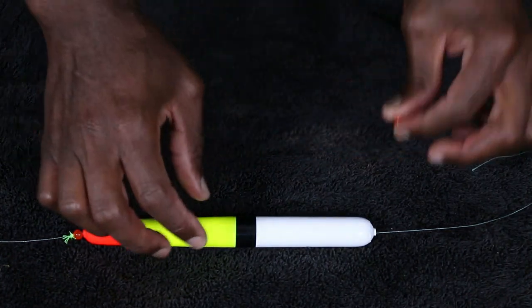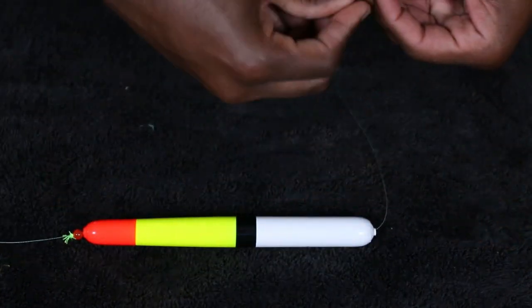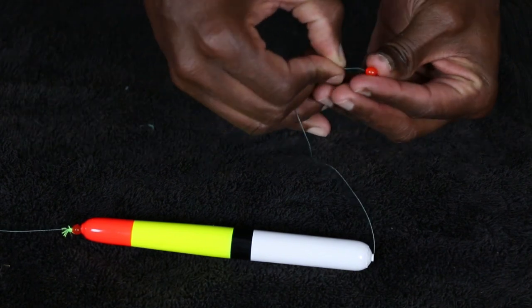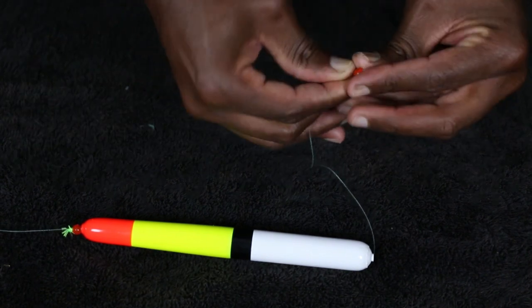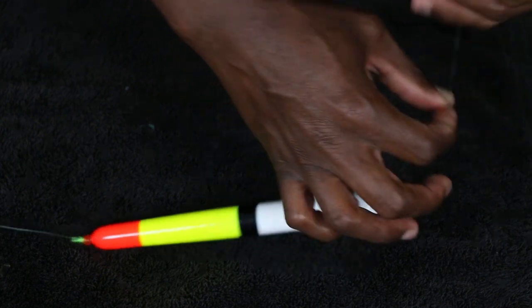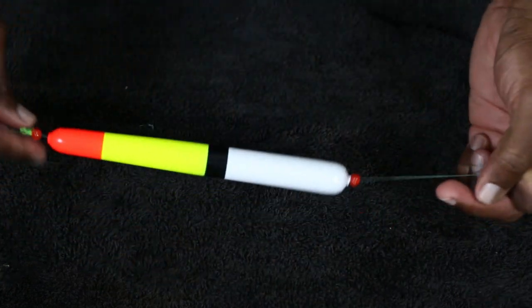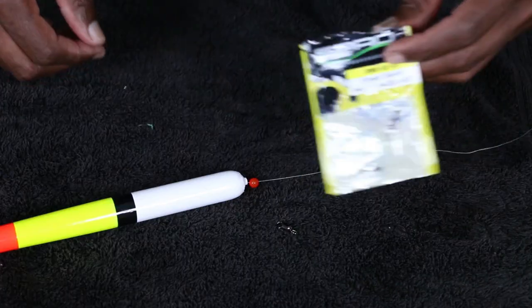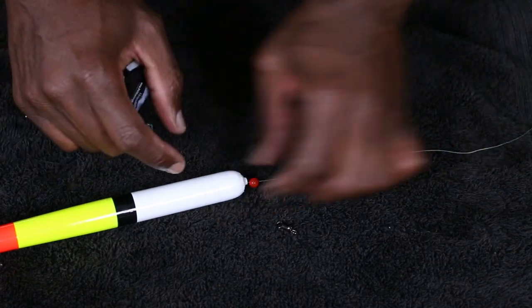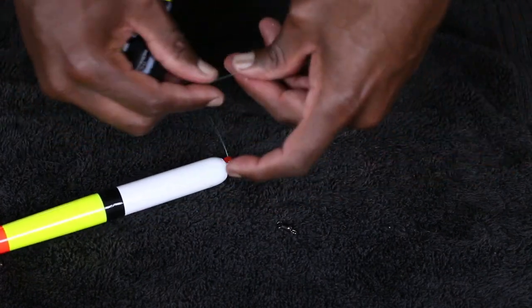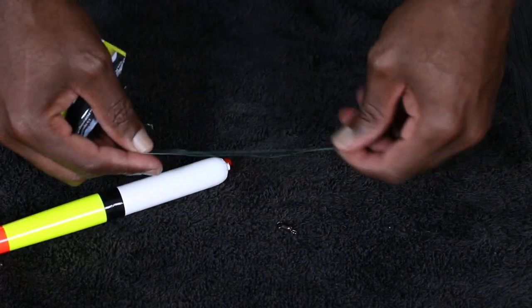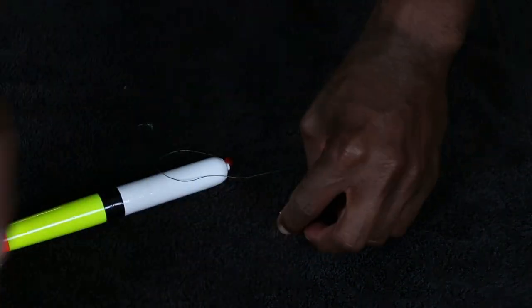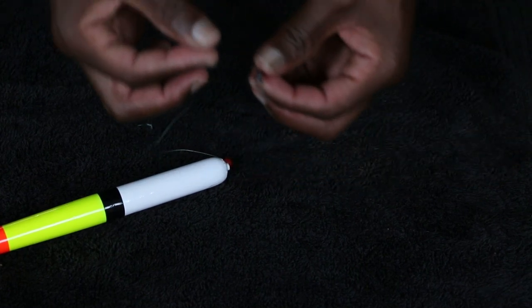Alright, so next we have to install another bead. Okay, so we install another bead to go beneath the bobber stopper. There we go. Alright, so now we got our beads on both ends of the bobber stopper like that. Alright y'all, so next up, if you know how to do a uni to uni, braid to mono, then you can do a uni to uni. In my case I don't, so I just like to use the actual swivel, keep it simple.